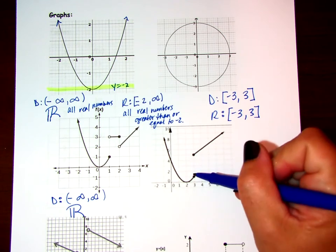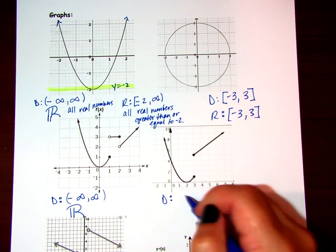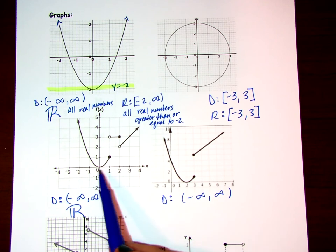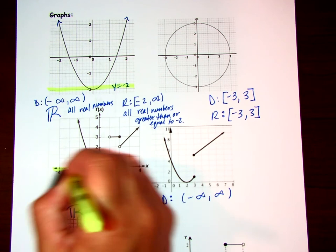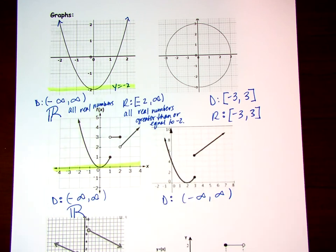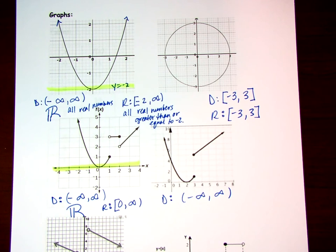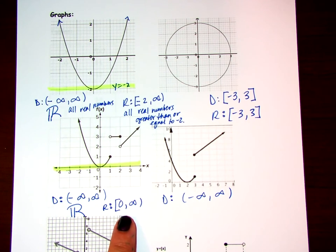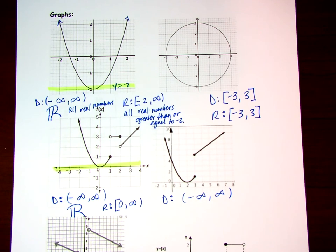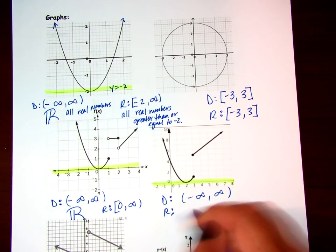For this next graph, the domain continues in both directions but starts at the same dot. The domain is also negative infinity to infinity. For the range on the piecewise function, the lowest boundary or minimum is at zero, and it continues forever upward. So the range goes from zero to infinity, with zero included. We can also state this as all real numbers greater than or equal to zero. Even with some overlap between pieces, the range still goes from zero to infinity.